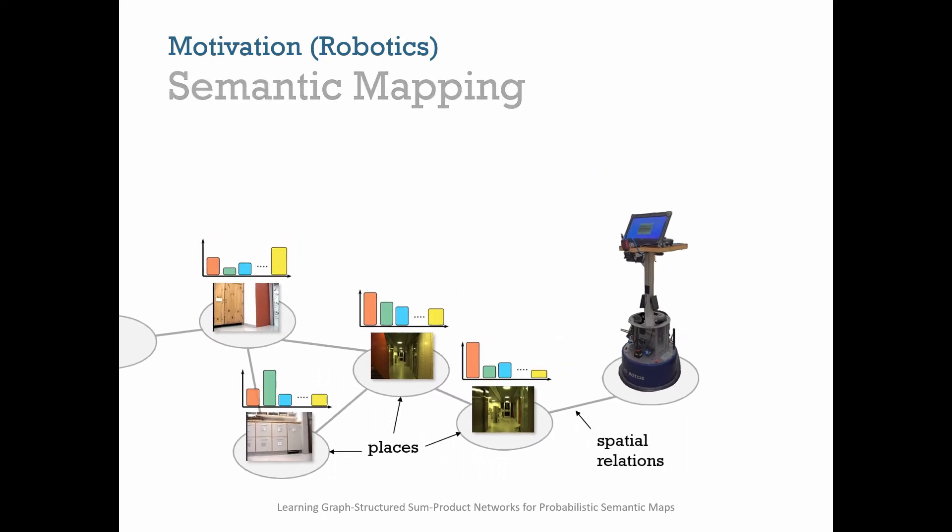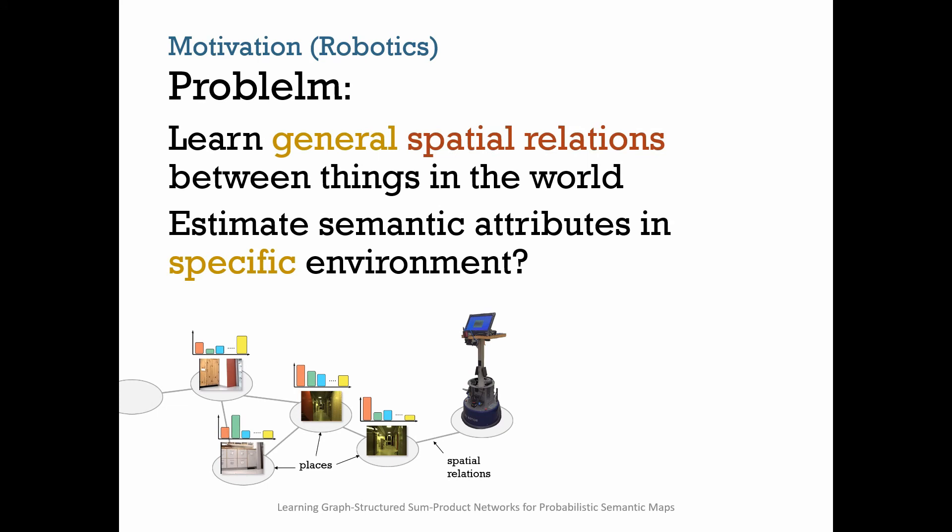The problem we address is the following. Can we learn general spatial relations between things in the human world and leverage them in the estimation of latent semantic attributes of entities perceived by a robot in its specific environment? In other words, we want to model the semantic map as a whole, a problem generally referred to as structured prediction.